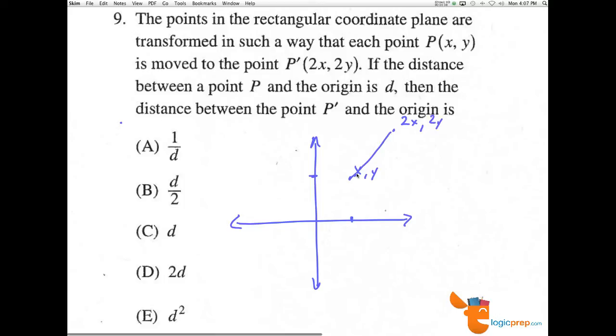At (2x, 2y) here, we're doubling in one dimension, and our distance is also in one dimension, so that's also going to get doubled. So where this is d, then all the way out to (2x, 2y) would be another d, making it 2d. So 2d is the correct answer.